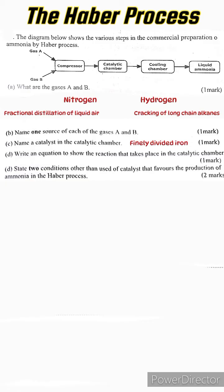Moving on, part d: Write an equation to show the reaction that takes place in the catalytic chamber. In this chamber we are having nitrogen reacting with hydrogen to form ammonia, and there is our reaction.